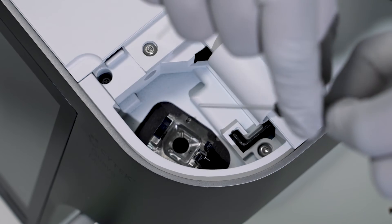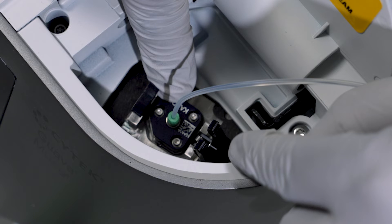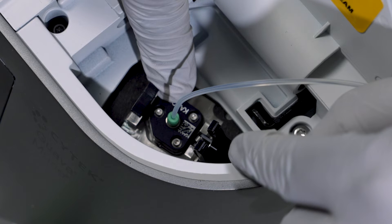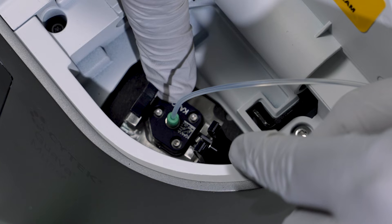Carefully lower the flow cell into the receptacle, aligning the cutouts. If you feel any resistance, the flow cell is not aligned properly in the receptacle and you will need to remove the flow cell and reinsert.